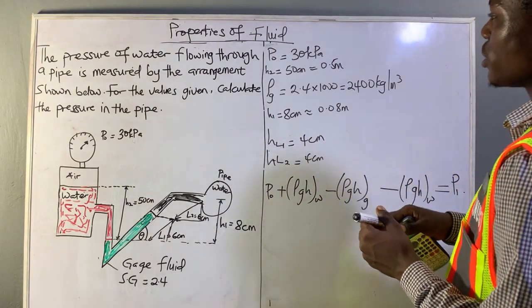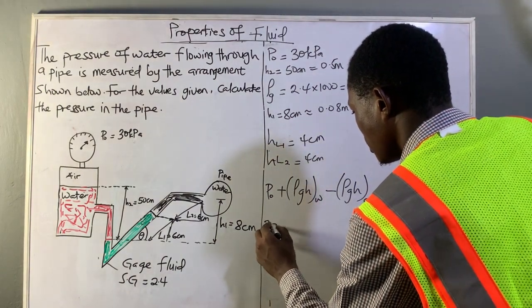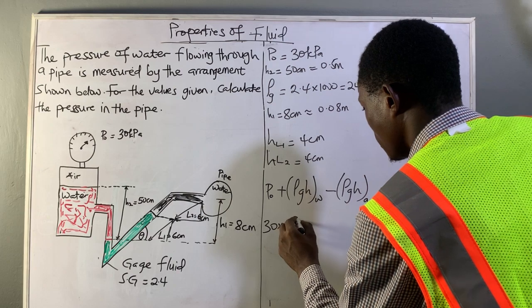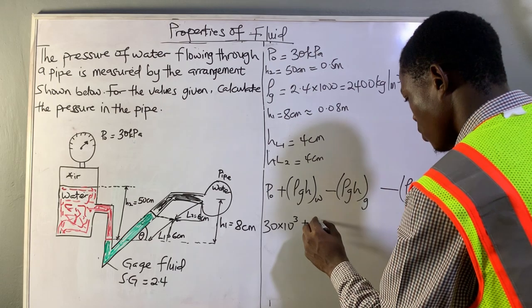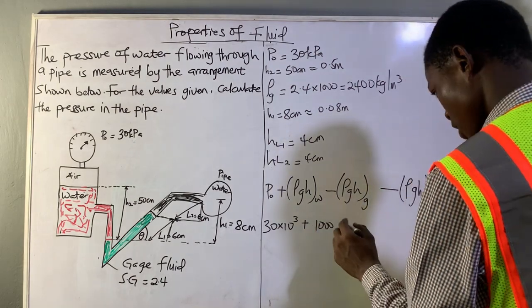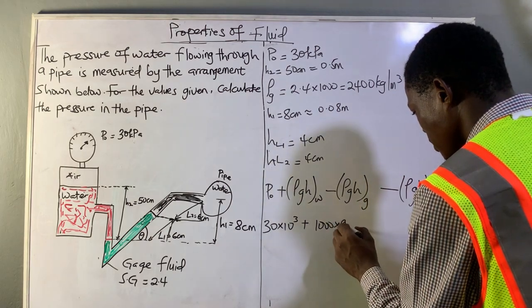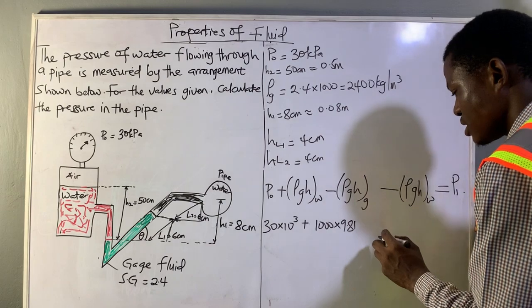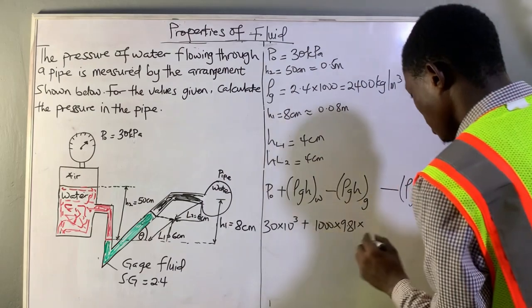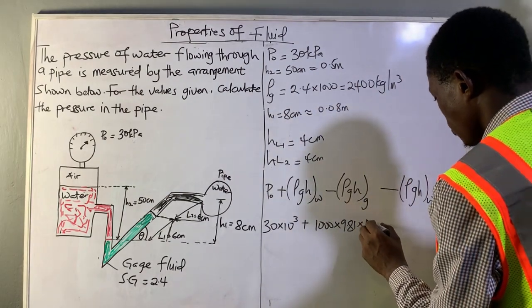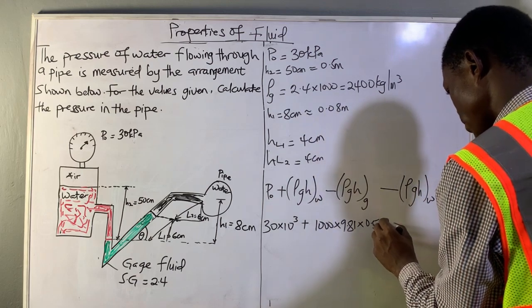Now we can input our parameters that we have. We have 30 times 10 to the power 3, which is 30 kilopascals, plus the density of water, 1000 kg per meter cubed, times gravity, 9.81, times the height of water, the first height of water, 0.5 meters.